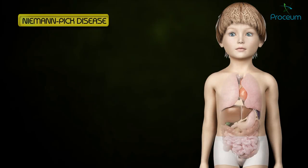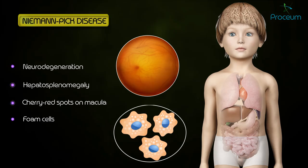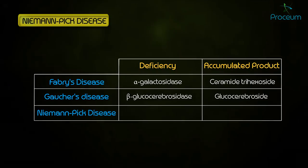Niemann-Pick disease presents with progressive neurodegeneration, hepatosplenomegaly, cherry red spots on the macula, and foam cells. It is caused by a deficiency in sphingomyelinase, leading to an accumulation of sphingomyelin with central nervous system involvement.